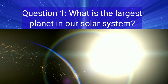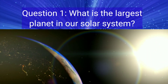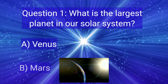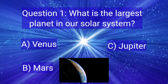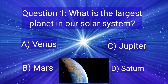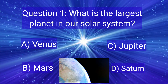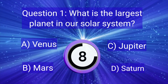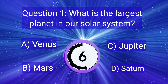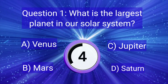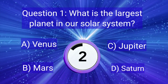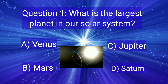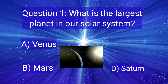Question 1. What is the largest planet in our solar system? A. Venus, B. Mars, C. Jupiter, D. Saturn. You have only 10 seconds to think. Your time is starting now. Okay, friends, your time is up. The right answer is C. Jupiter.